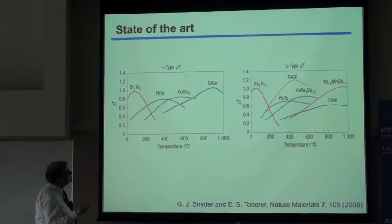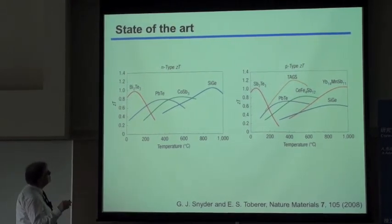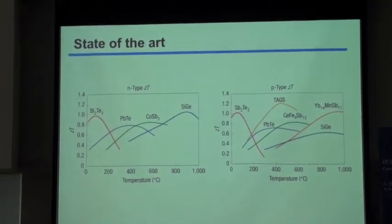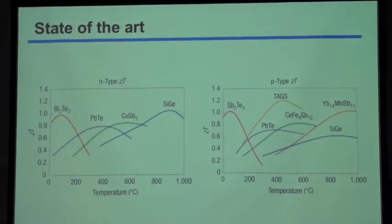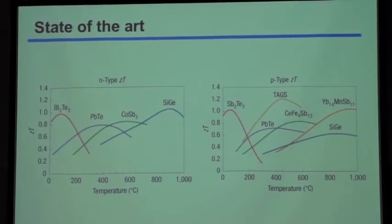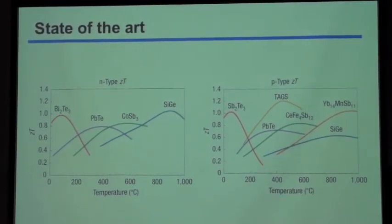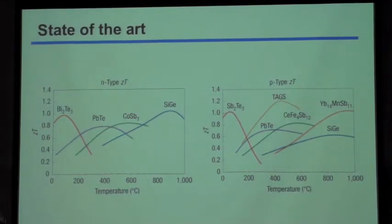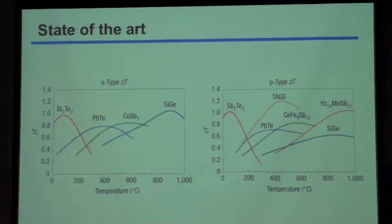The state of the art for n-type materials, plotting ZT as a function of the mean temperature, shows silicon-germanium at a value of about 1.1. When you want to go to low temperatures, you need to use very heavy and in some cases environmentally unfriendly elements. P-type materials are similar — again silicon-germanium and some compounds of lead and antimony, mostly very heavy elements.